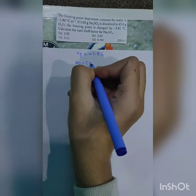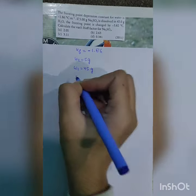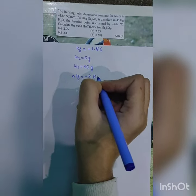of solute. The mass of solute is given as 5 gram dissolved in this much gram of solvent. The solvent mass is given as 45 gram. The freezing point is changed by delta Tf, given as minus 3.82 degree Celsius.